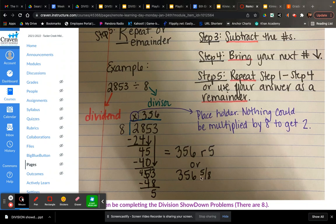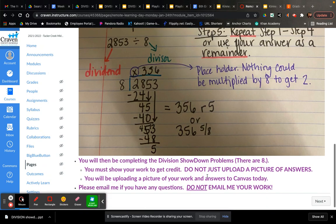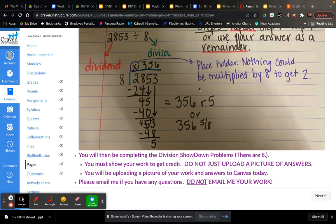Here are the two ways that you can write it. You have 356 remainder of five is your answer, or 356 and five eighths. Once you get this note page copied down, you're going to be completing a division showdown. There are eight problems, so you need to make sure that you complete those eight problems.